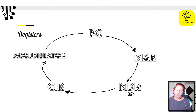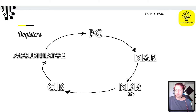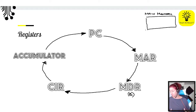Write down your five registers as a cycle. The PC feeds into the MAR, the MAR leads into the MDR — if you're doing AQA, that's called the MBR, not MDR. Then the MDR leads into the CIR, and finally the accumulator. Then we go all the way back to the beginning. There is also the main memory — either your RAM or the cache.